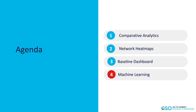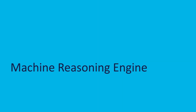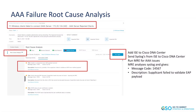Finally, let's discuss some enhancements to the machine learning capabilities of DNA Center, specifically around the machine reasoning engine, also known as MRE. We now have the ability for ICE syslogs to be analyzed by DNA Center's machine reasoning engine in the AI-driven issue section of DNA Assurance. In other words, after you integrate ICE and DNA Center, syslogs from ICE will be sent to DNA Center and the machine reasoning engine can analyze them for AAA issues.